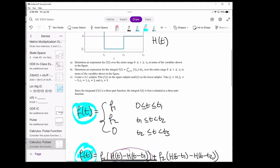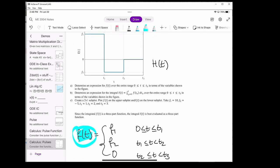Okay, part B of the problem wants us to determine an expression for the integral i of t equals the integral from t0 equals 0 to t of f of t0 dt0 over the entire range 0 to t3. So basically, we want to take the integral of this three-part function. There are two ways to do this. One way is more of the analytical way, which I'll do first. The second way is more of a graphical method, and it's logical and easy to understand, but it's not as mathematically rigorous.